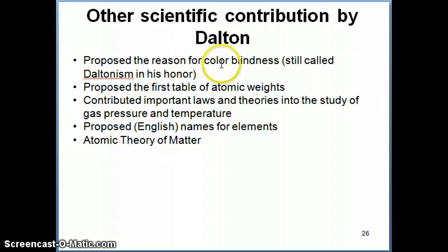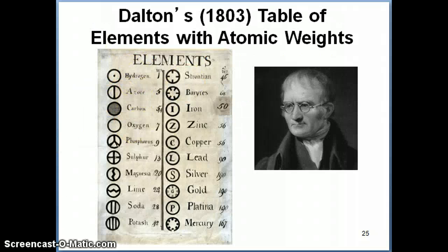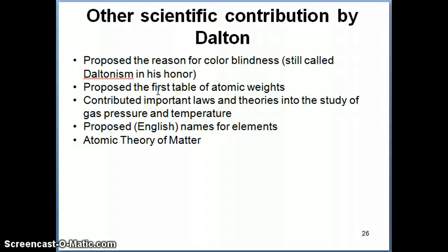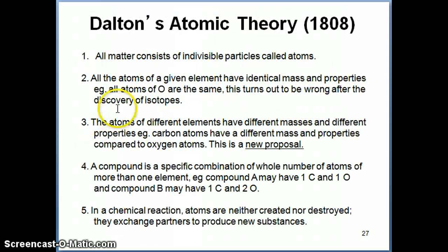He was the first person to propose a reason for colorblindness, because he himself is colorblind. This is now called Daltonism in his honor. As I just showed in the previous slide, he proposed a first table of atomic weights, and he was the first person to kind of decide that maybe we should assign some weights to this thing, so then we can get chemical formulas from them. He also had important contributions in the development of theories of gases in terms of partial pressures and temperatures, and this is something called Dalton's Law, which we'll see when we talk about gases. He gave some names to the elements, English names specifically, because before that it was all Latin names, and of course, the important contribution was the atomic theory, which we're going to get into now.